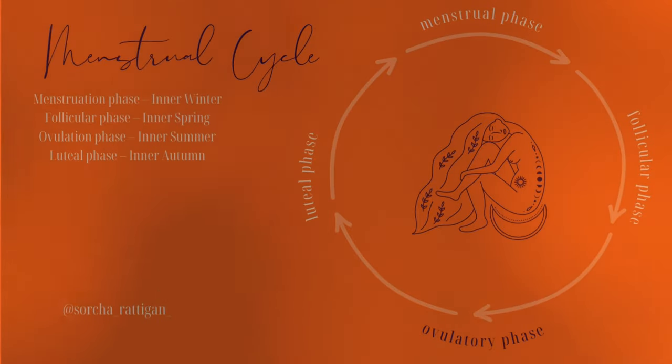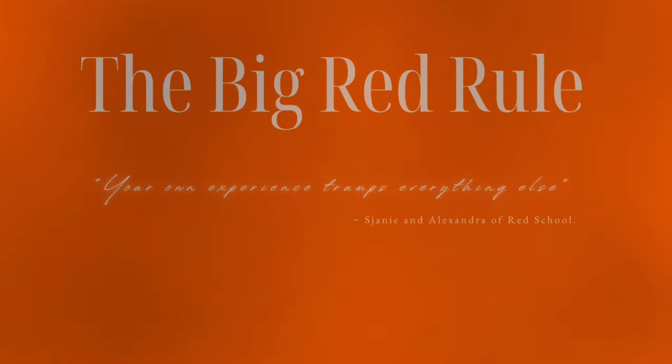Ovulation, ovulatory phase, can also be known as inner summer. Big shout out to Red School — please remember the big red rule: your own experience trumps everything else. Hats off to Shana and Alexandra for discussing this language so we can talk about cycles with this beautiful framework of the seasons. You can even go a step further and have this as like the wheel of the year. We've just had the spring equinox — I think it was literally yesterday, Thursday the 21st.